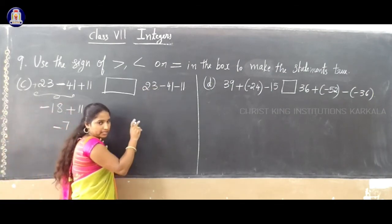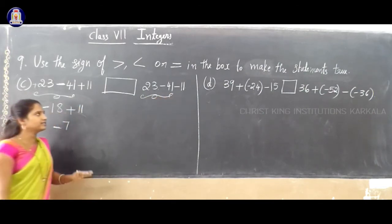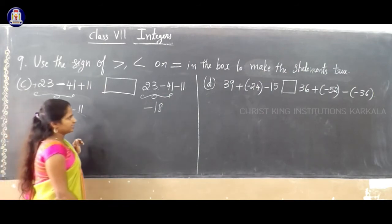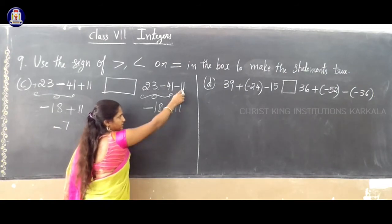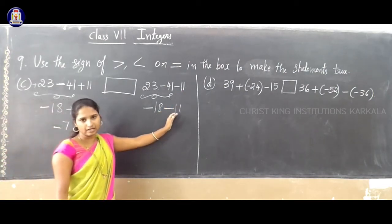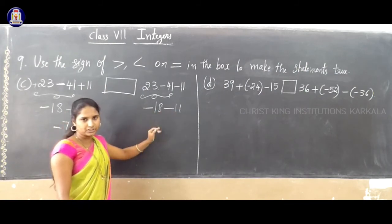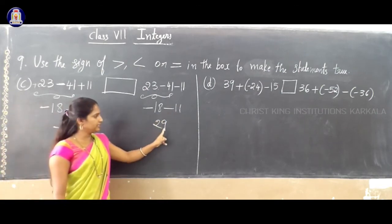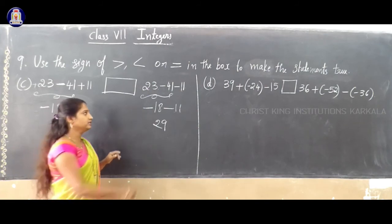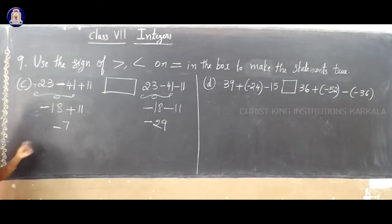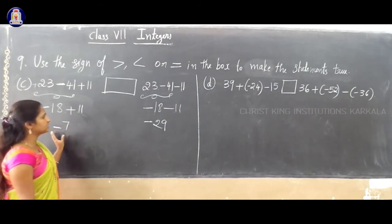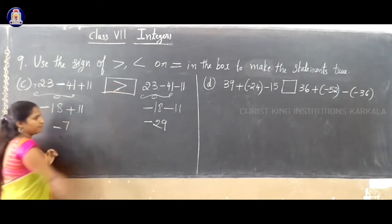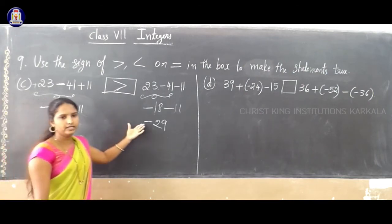RHS is plus 23 minus 41 minus 11. First, 23 minus 41 gives minus 18. Then minus 18 minus 11 — same signs, addition — 18 plus 11 is 29, with minus sign giving minus 29. Comparing: LHS is minus 7, RHS is minus 29. Minus 7 is greater than minus 29, so LHS is greater than RHS.